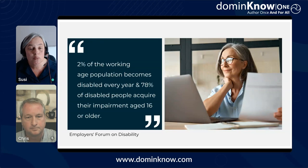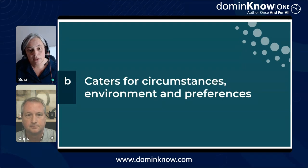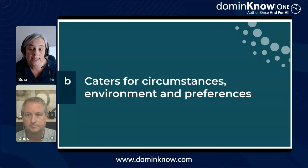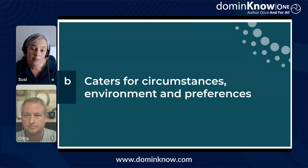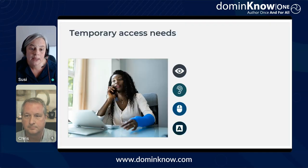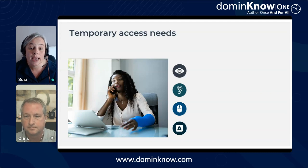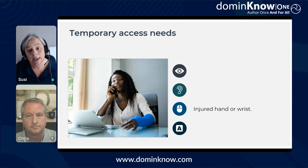That's why I believe it's so important to adopt an accessibility-as-the-default approach. Our next tangible benefit of accessible learning content is that it caters for our learners' circumstances, environments and preferences. We'll start with circumstantial or temporary access needs — think about some temporary circumstances that might affect the ability of your learners to interact with content. For motor, something which stops you being able to use your mouse, such as an injured hand or wrist. For vision, blurred vision due to eye surgery or hay fever — a particular favourite of mine is losing my reading glasses.